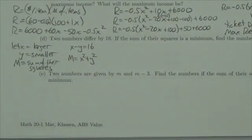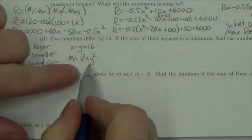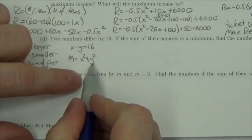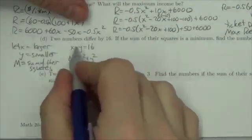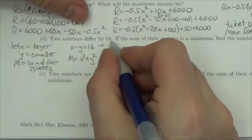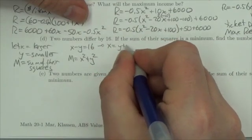Now, I am looking to find the minimum sum of their squares. So I want to complete the square on this. I've got two variables there. I don't want that. So what I'm going to do here is take this equation. I'll make this x equals y plus 16.